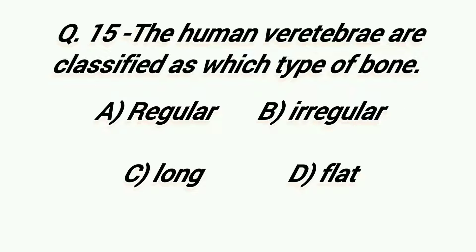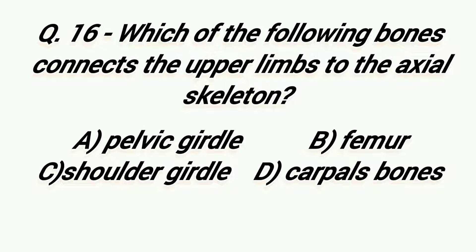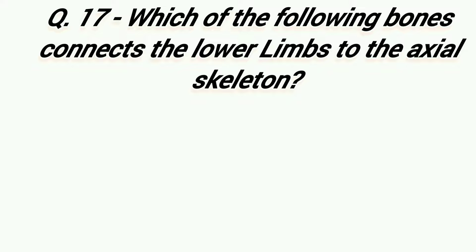Option A: Regular, Option B: Irregular, Option C: Long, Option D: Flat. Right answer is Option B, Irregular. Which of the following bones connects the upper limbs to the axial skeleton? Option A: Pelvic Girdle, Option B: Femur, Option C: Shoulder Girdle, Option D: Carpal bones. Right answer is Option C, Shoulder Girdle.